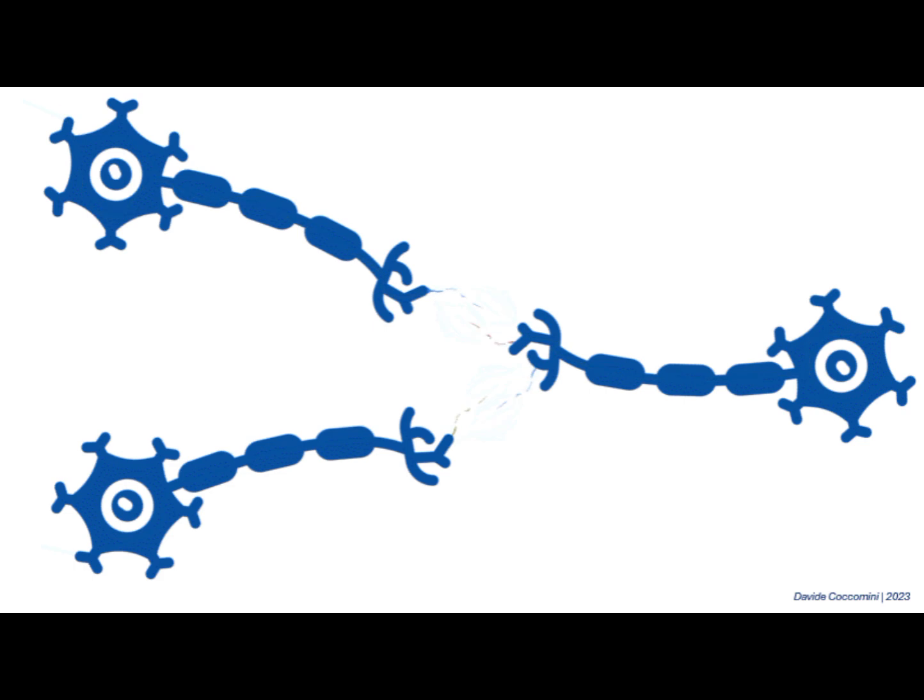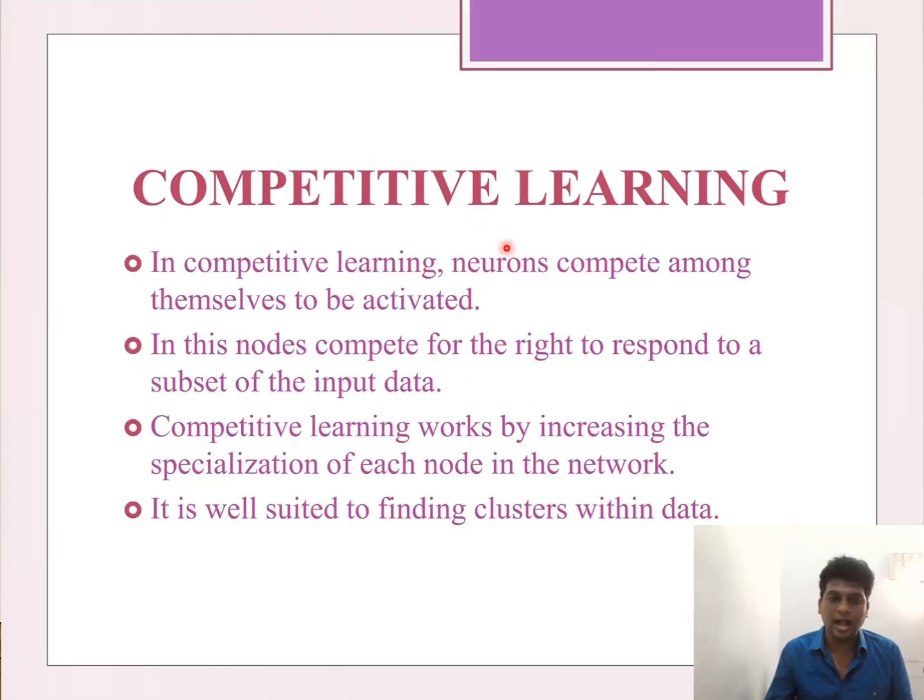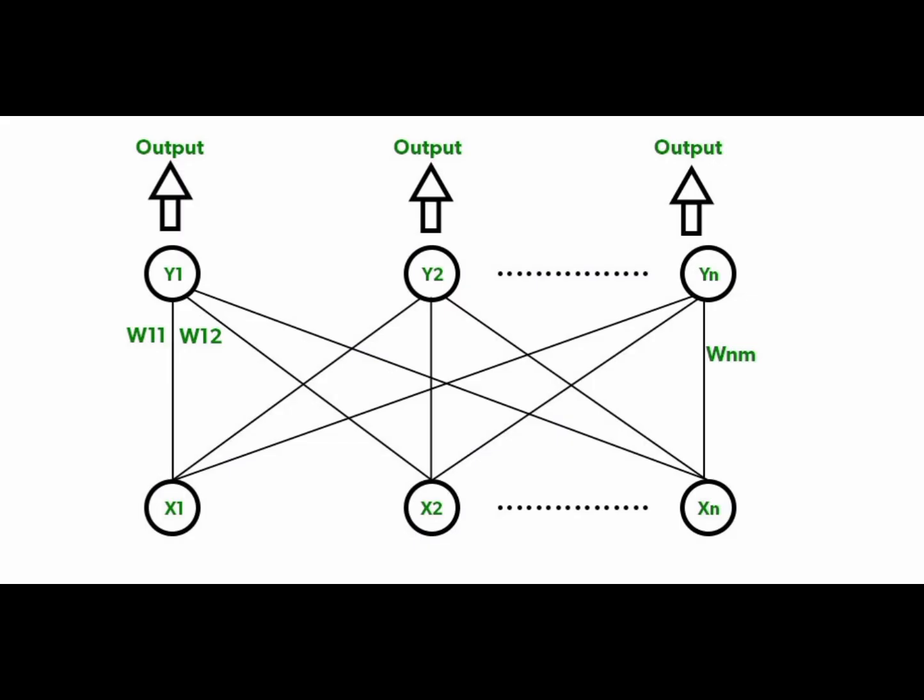The next type is competitive learning, which is unsupervised-based learning using a single layer feed-forward neural network. The main rule is that the winner takes all. The output nodes try to compete with one another to represent the input pattern, and the winner is declared according to the node having the most output.